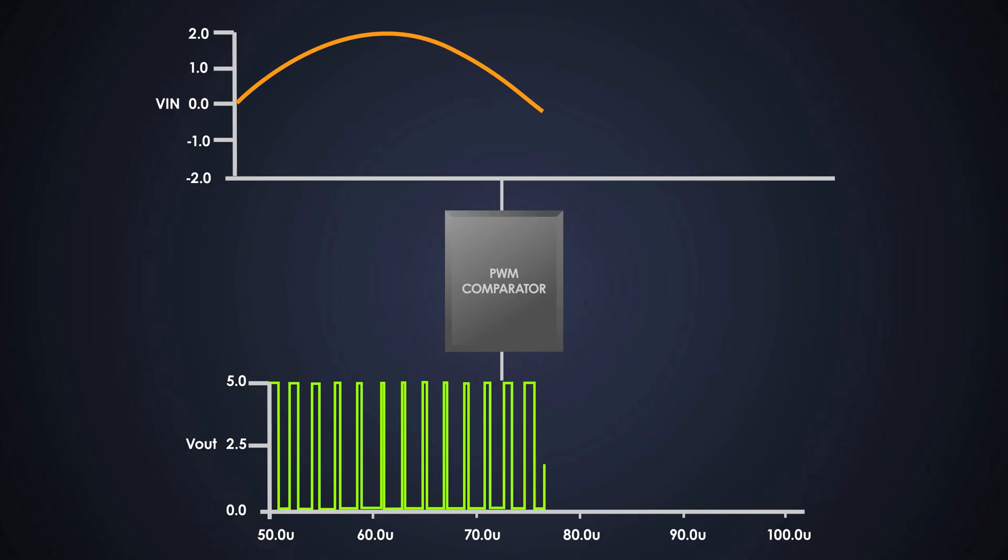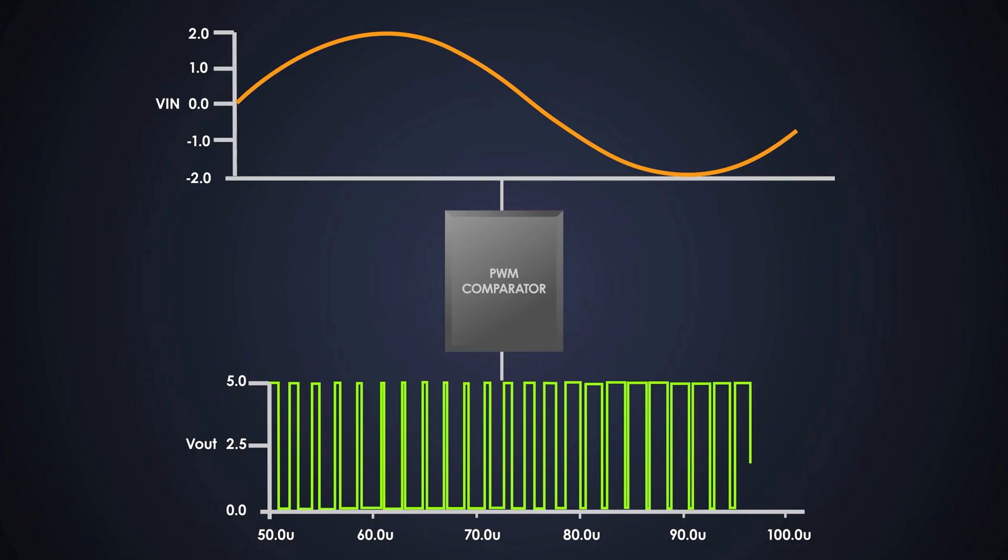To sum it all up, the circuit takes an analog voltage input between minus 2 to plus 2 volts and converts it into PWM signal with 0 to 5 volts. The duty cycle changes according to the input voltage. All of this is done using just op amps and few resistors.